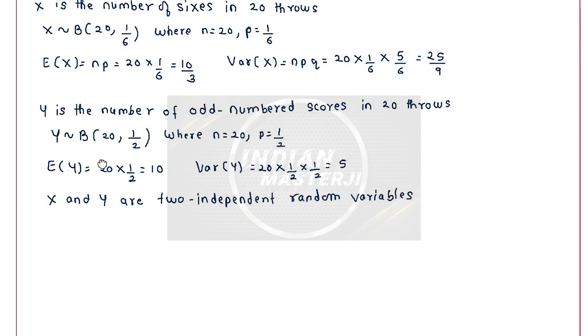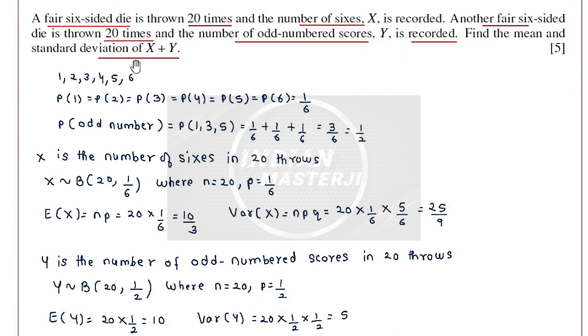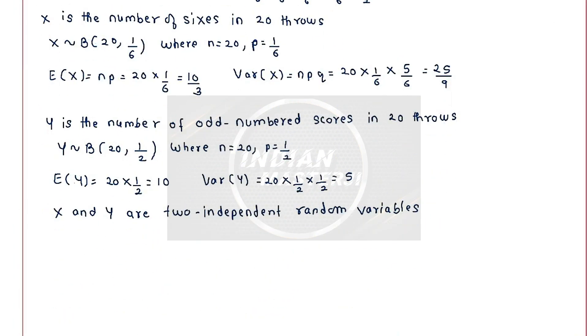Now they are asking us to find out the mean and the standard deviation of X plus Y. So the new random variable is X plus Y. The mean of X plus Y will be equal to mean of X plus mean of Y. That will be equal to 10 by 3 plus 10, so that will be equal to 40 by 3. In terms of three significant figures we can write it as 13.3.